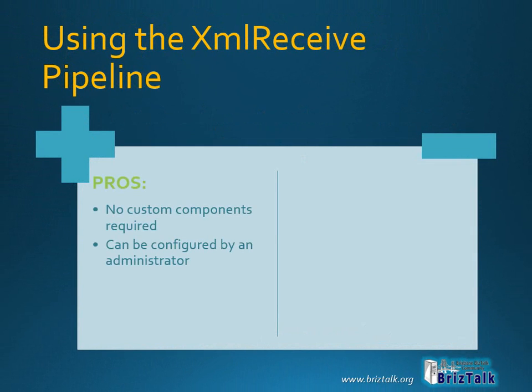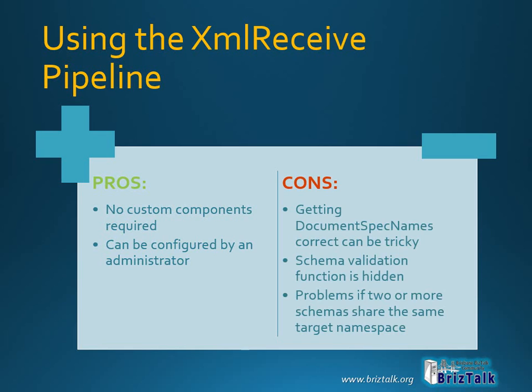The advantage of using this method is that there is no custom development required, since it is achieved simply by configuring out-of-the-box components in the BizTalk admin console. This means that an administrator can add this validation to a receive port after the application has been fully developed and deployed, without requiring any new development cycle. The changes are effective immediately — you don't even need to restart the host instances. A potential disadvantage of this approach is that it can be tricky to get the fully qualified names correct, and you won't know this until runtime when validation just doesn't work as expected. It also tends to obscure the functionality a bit, because unless you look into the instance properties, you won't see that schema validation is enabled.